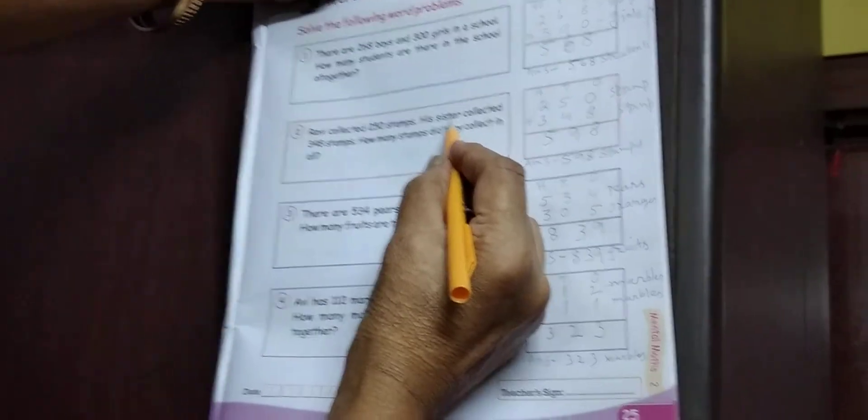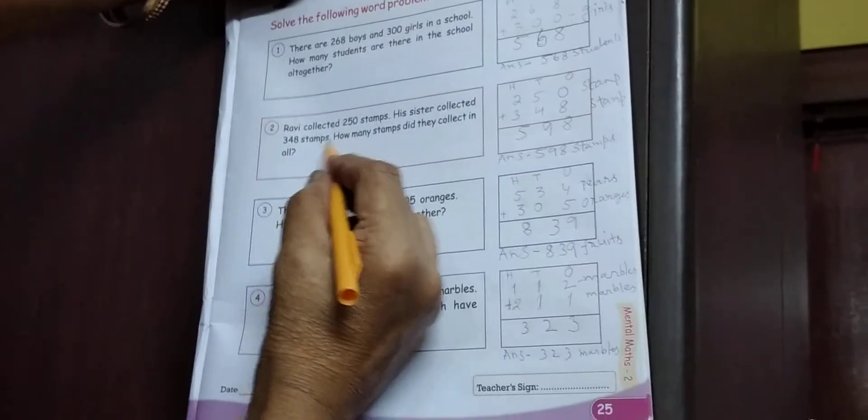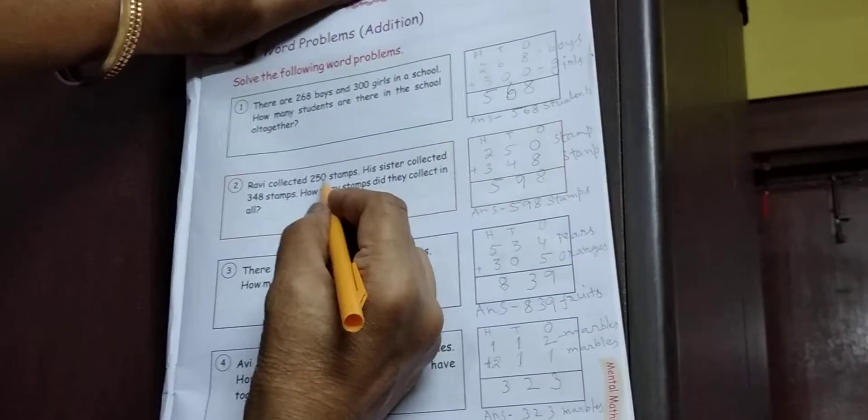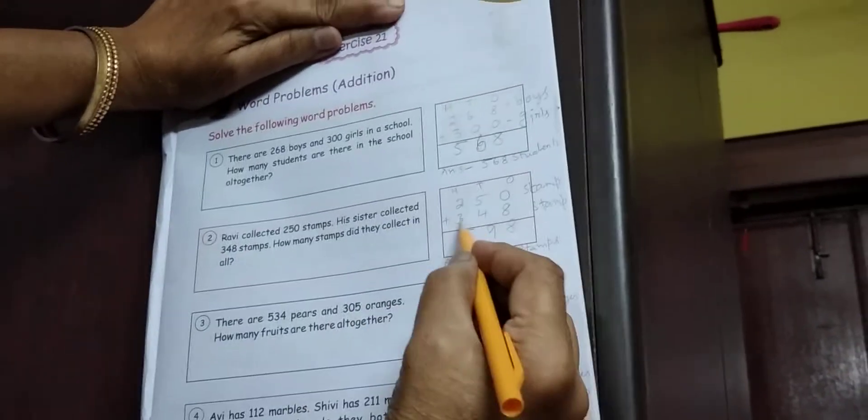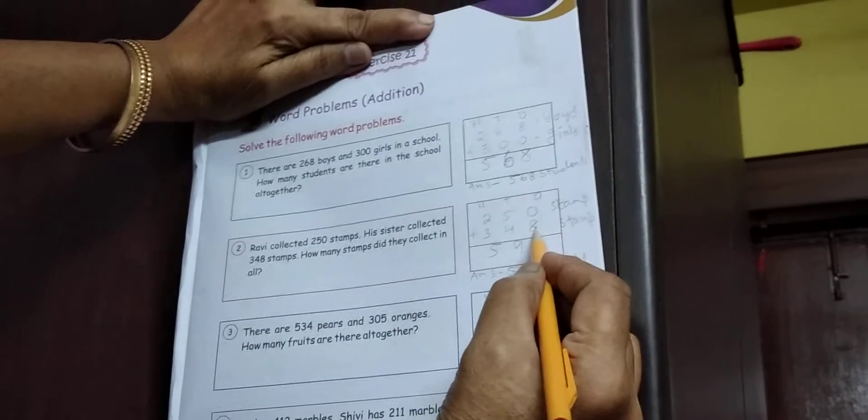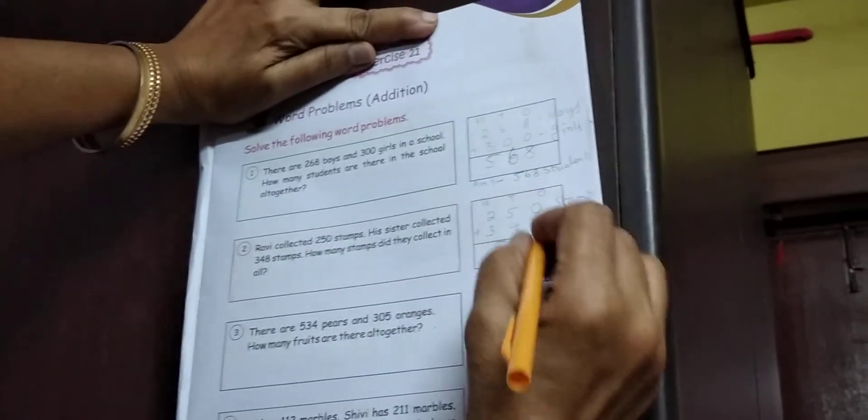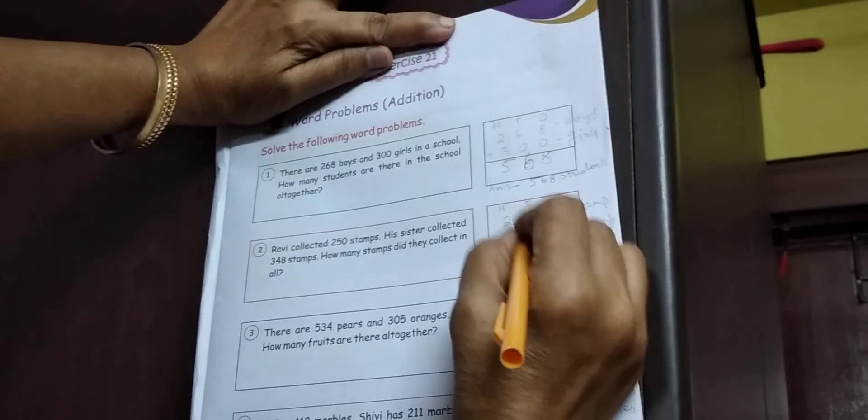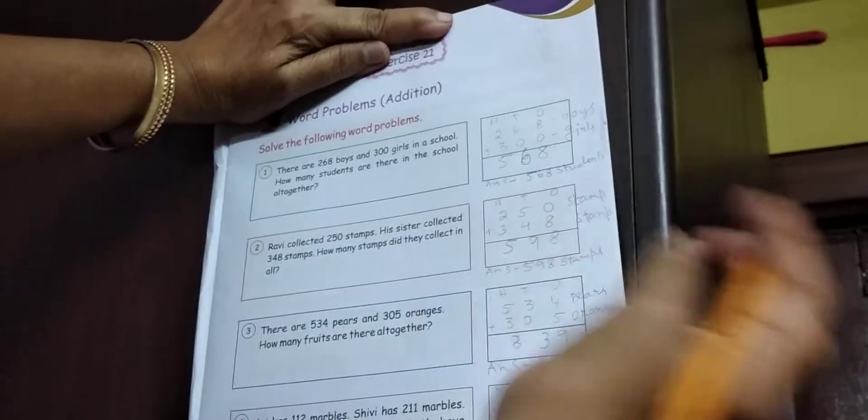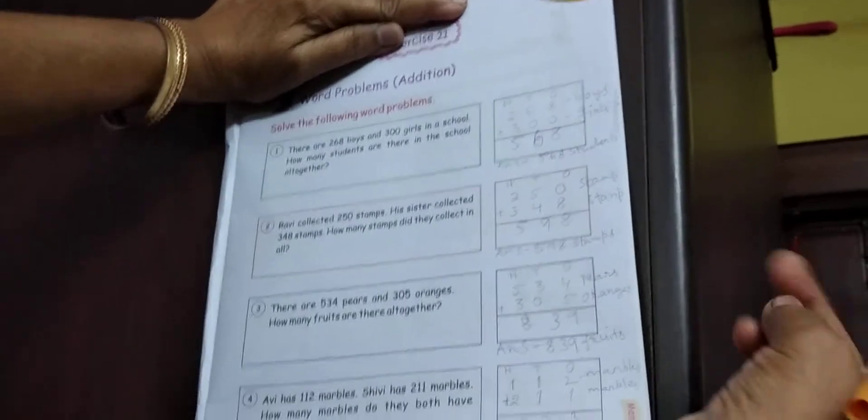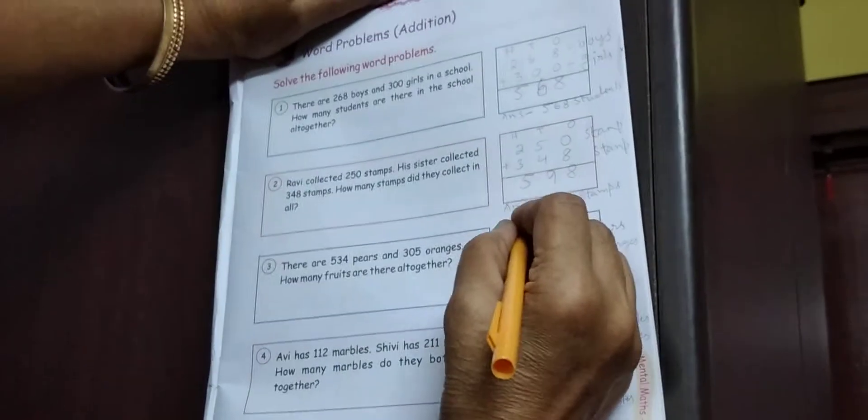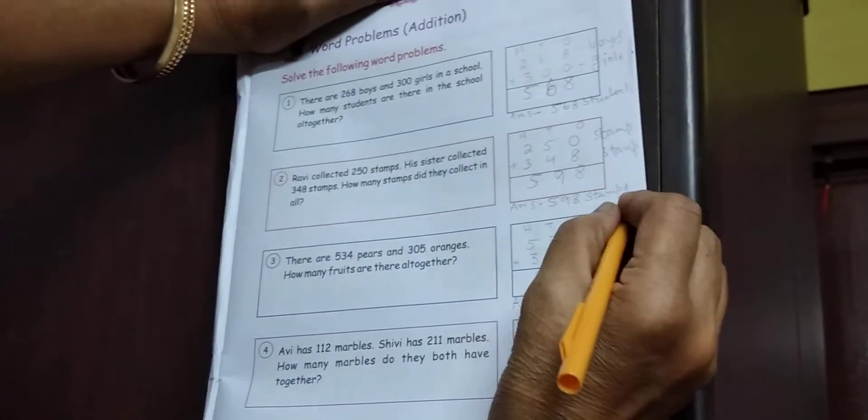Next, Robi collected 250 stamps. His sister collected 348 stamps. How many stamps did they collect in all? 250 stamps. Robi ko arusko sister ko 348 stamps. Kia huwa? 8 ka 8. 4 ar 5 mein 9. 4, 5, 6, 7, 8, 9. And 3 ar 2 mein 5. 5, 5, 9, 8. The answer? 598 stamps.